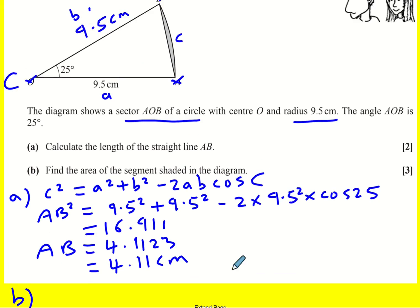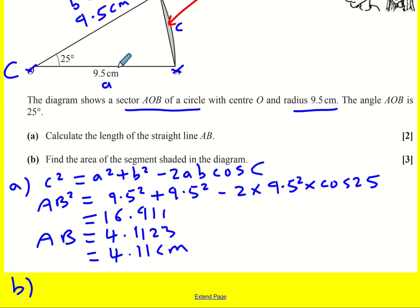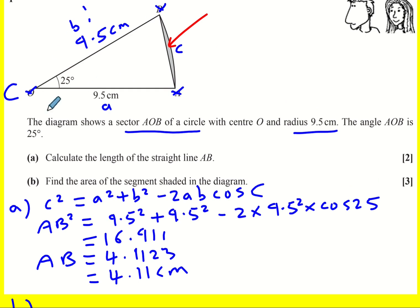In B we're asked to find the area of the segment shaded in the diagram. The segment is this little bit here. So to do that we need to find the area of the sector and minus the area of the triangle.